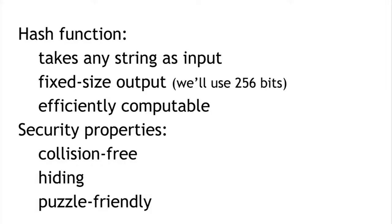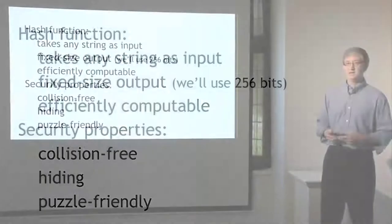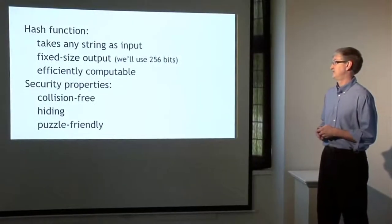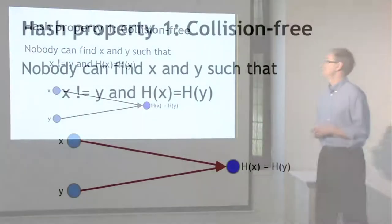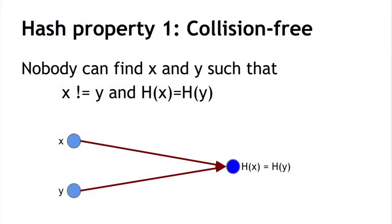For each property, I'll talk about what it means and why it's useful. First, collision-free. The first property is that it's impossible — nobody can find values x and y such that x and y are different and yet the hash of x equals the hash of y. So nobody can find a situation where you have x and y that are separate and yet they hash to the same value.